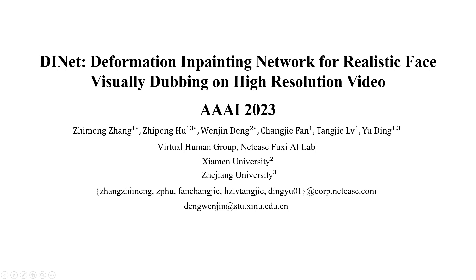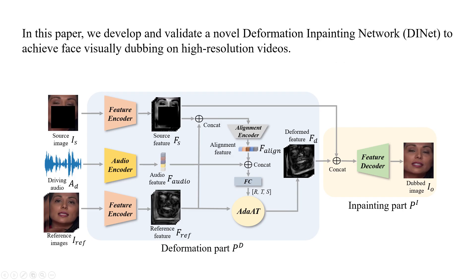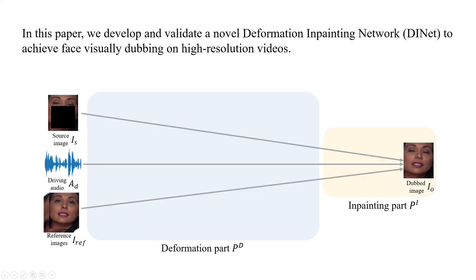D-I-Net: Deformation-in-Painting Network for Realistic Face Visual Dubbing on High-Resolution Video. In this paper, we develop and validate a novel Deformation-in-Painting Network, D-I-Net, to achieve face visual dubbing on high-resolution videos. D-I-Net consists of two parts: a deformation part and an in-painting part.